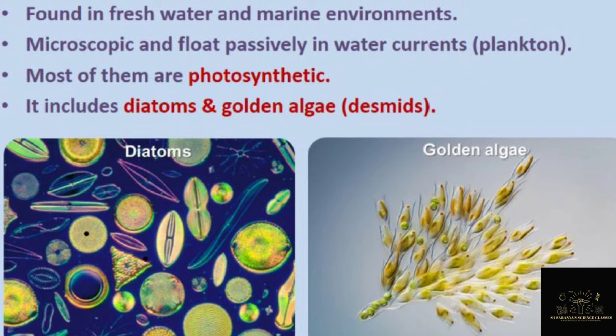Looking at the picture, these are the Chrysophytes. This group mainly includes diatoms and golden algae — golden algae are otherwise known as desmids. Chrysophytes are found in both fresh water and marine environments.